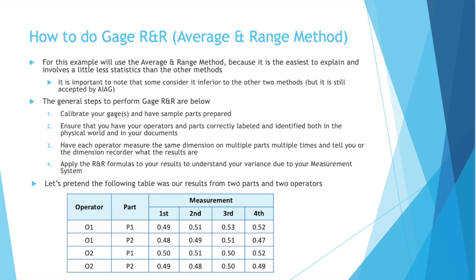Let's go over an example of how to actually do gauge R&R, and for this example we're going to use the average and range method, because it is the easiest to explain, and it involves a little less statistics than the other methods, and I don't want this video to be half an hour long. It is important to note that the average and range method is considered inferior to the other methods by some, however it is still an acceptable method per AIAG, and for instructional purposes it will help get the point across, and we'll still touch on the other two a little bit. The general steps to perform gauge R&R, the average and range method, are below.